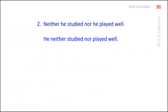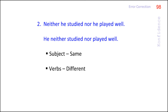This rule is also applicable for sentences combined with 'neither...nor.' In the second set, we have: 'He did not study well' and 'He did not play well.' The subject 'he' is the same in both, but the verbs 'study' and 'play' are different. So the correct sentence is 'He neither studied nor played well.' Please note that when we use 'neither...nor,' we need not use 'not' in the sentence.